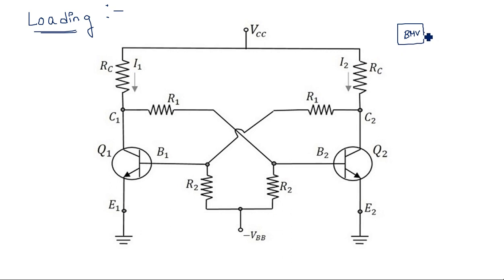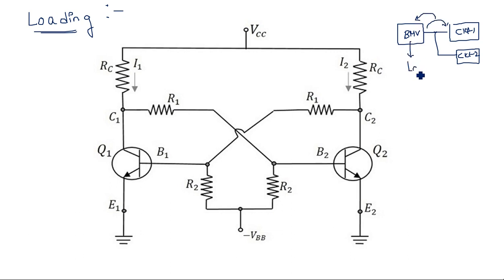The output of the bistable multivibrator can be connected to circuit 1, circuit 2, or any number of other circuits which it is used to drive. This driving capability must be considered for the bistable multivibrator. Whatever circuit is driven by the bistable multivibrator acts as a load. To handle this, the bistable multivibrator must be equipped with two additional diodes for proper switching actions.